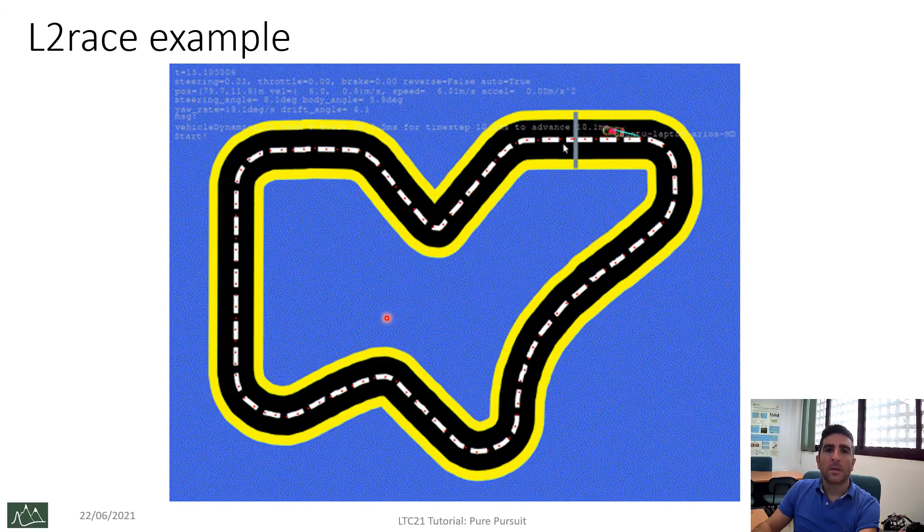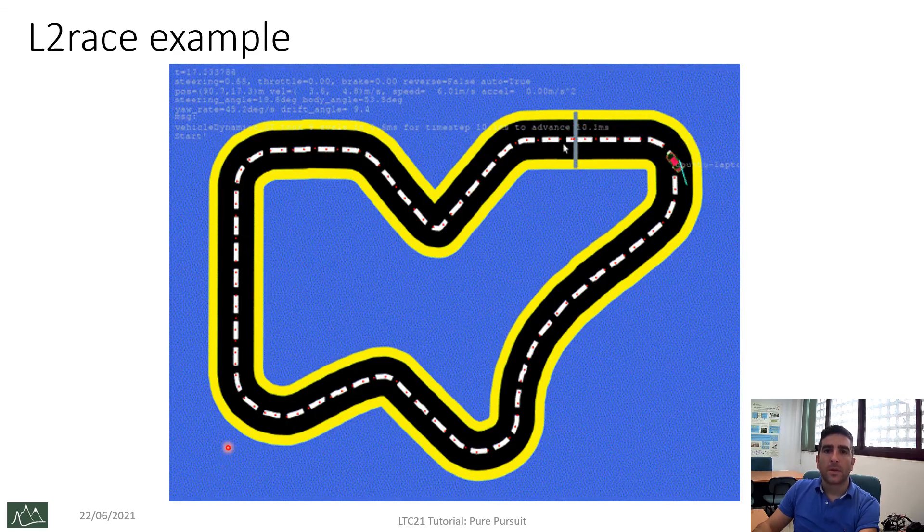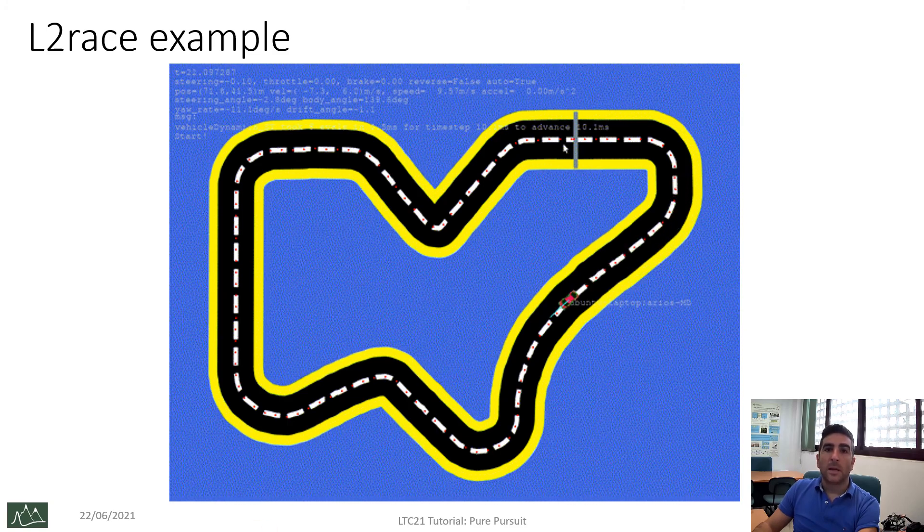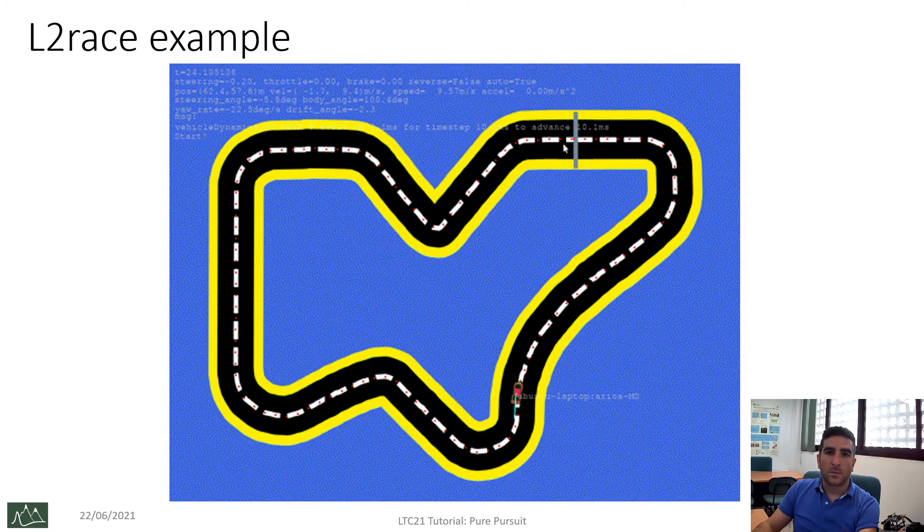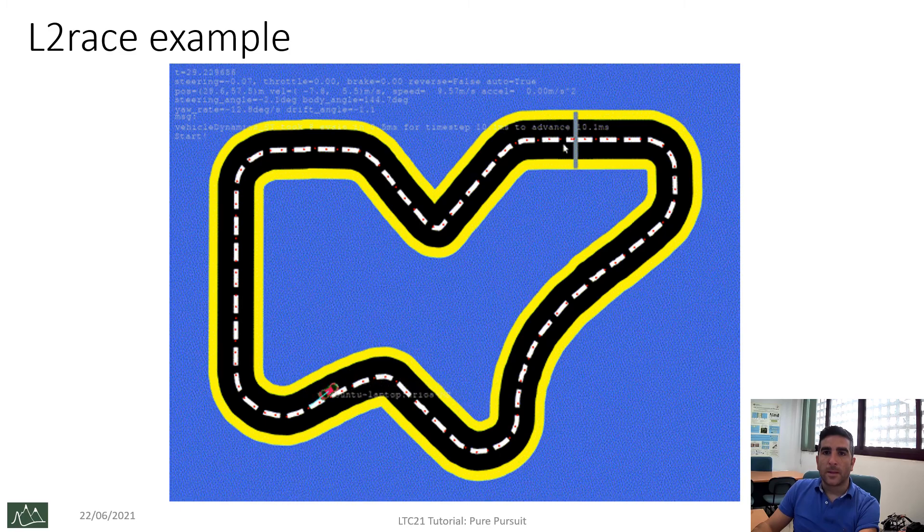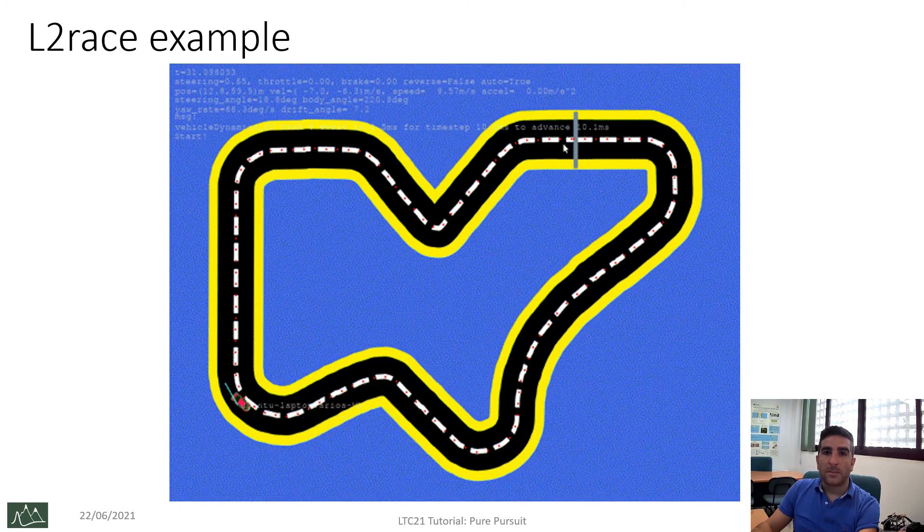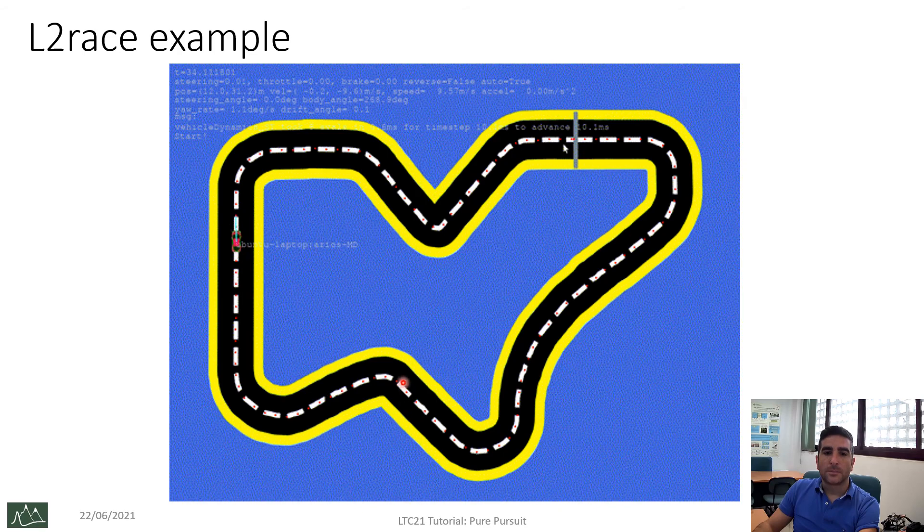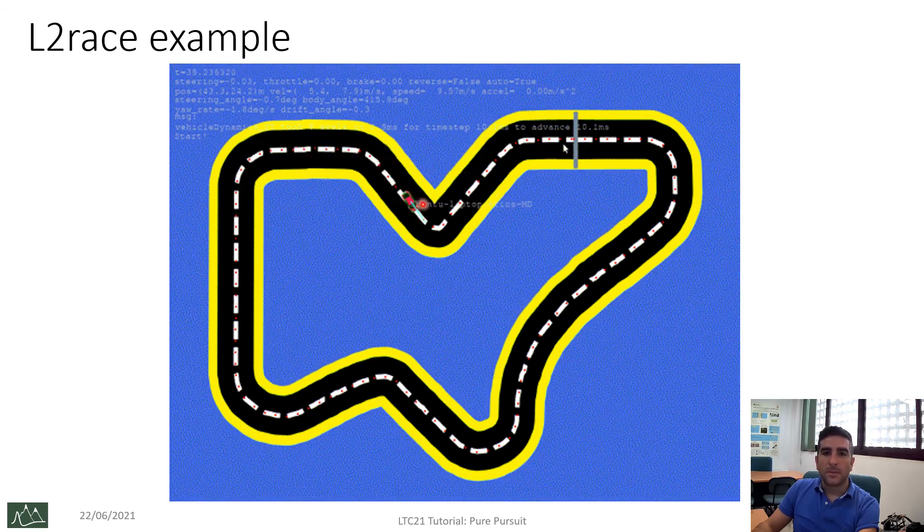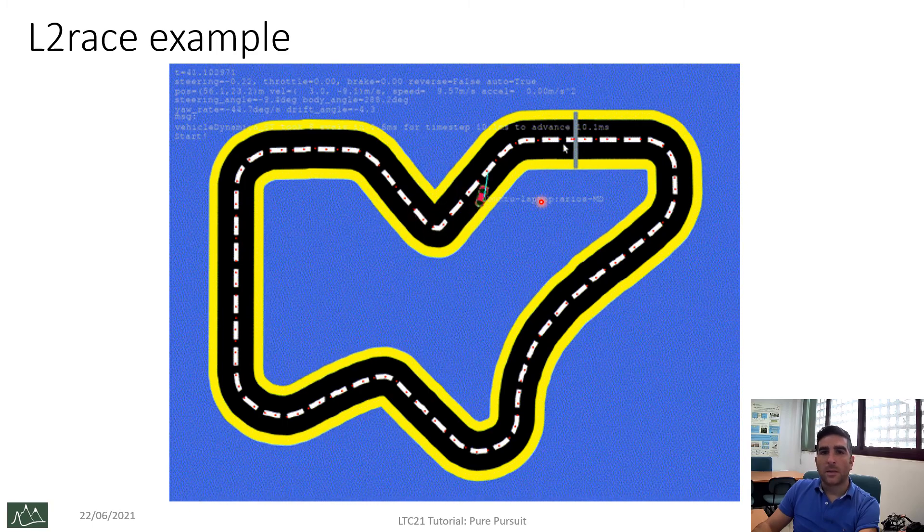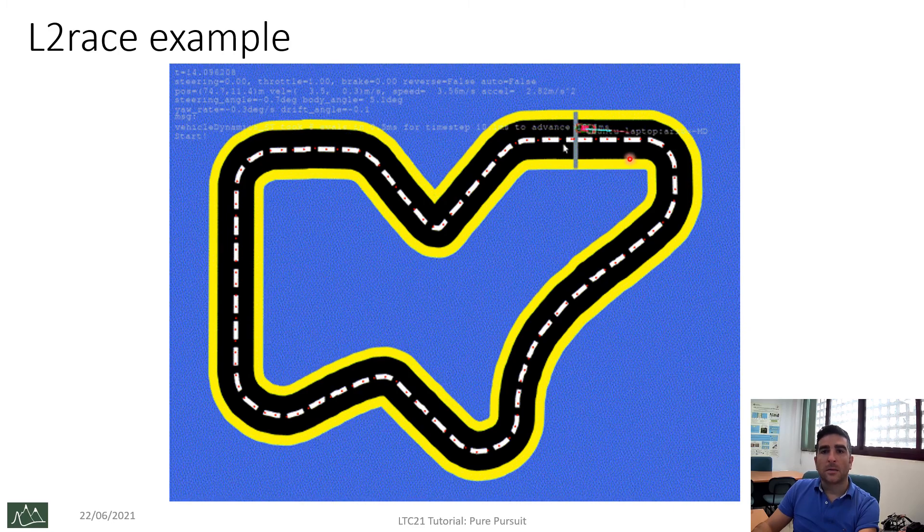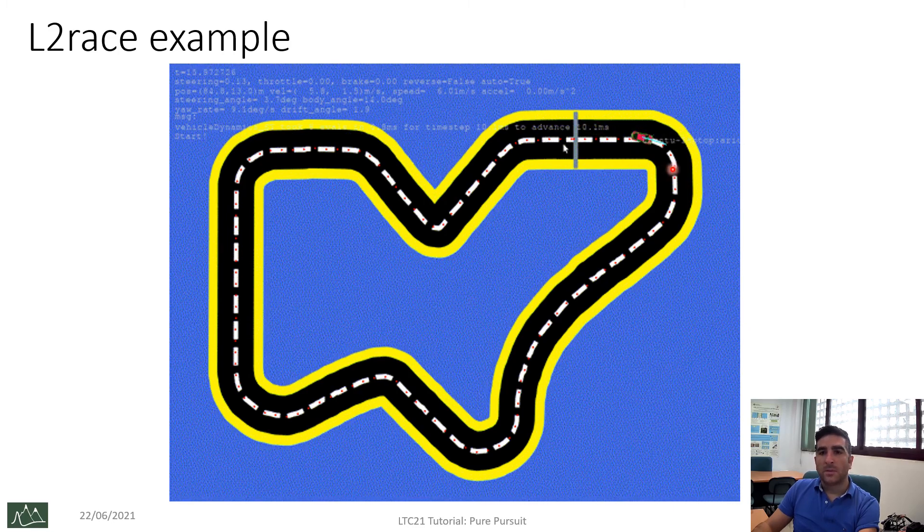To finish, I would like to show an implementation of the pure pursuit algorithm in our L2race simulator. Here, you can see a sequence of red points. They are the waypoint list painted on the path. And the blue line painted in front of the car is the steering angle of the car. We can see how the car follows the waypoints in this track.